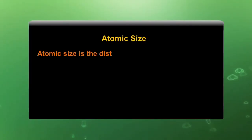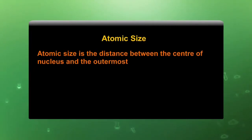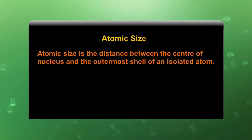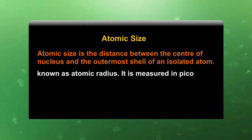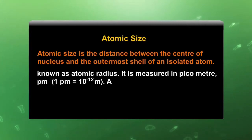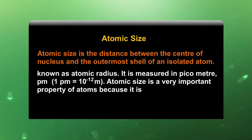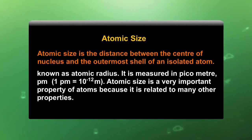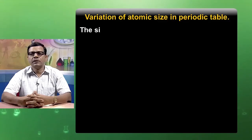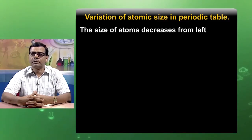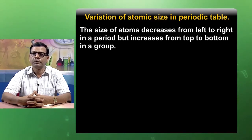Atomic size is the distance between the center of the nucleus and the outermost shell of an isolated atom. It is also known as atomic radius and is measured in picometers. Atomic size is a very important property of an atom because it relates to many other properties. The size of an atom decreases from left to right in a period, but increases from top to bottom in a group.